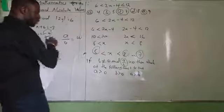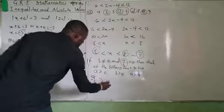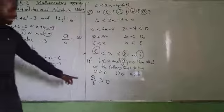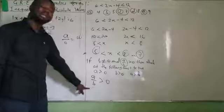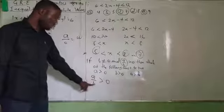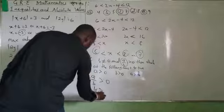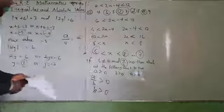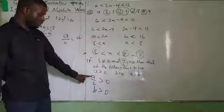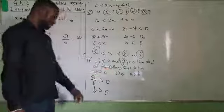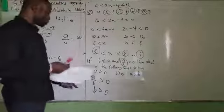For A over B to be greater than 0, A and B must have the same sign. My B will surely be greater than 0. And my A must also be greater than 0. It means B must be greater than 0. These are the conditions you need to understand.